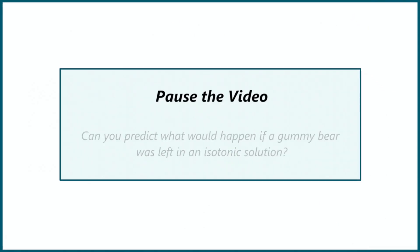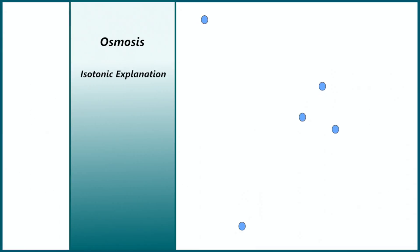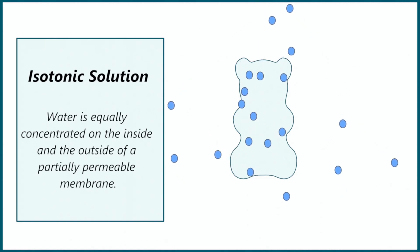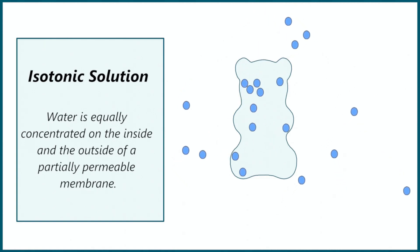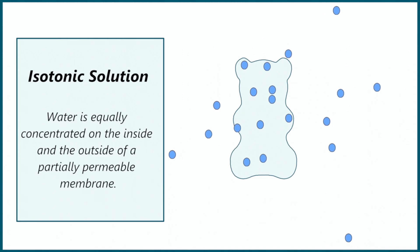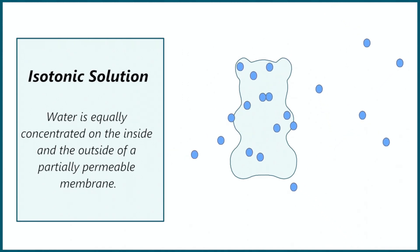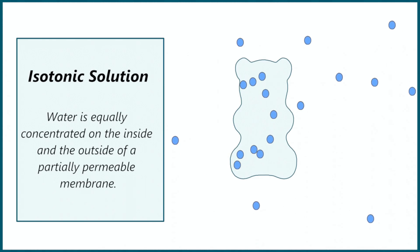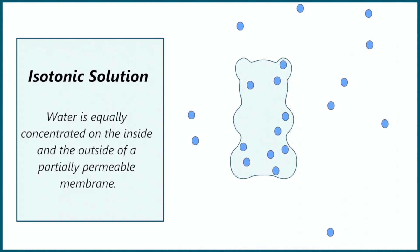Can you predict what would happen if a gummy bear was left in an isotonic solution? Pause the video and try to answer. For this gummy bear the water concentration is the same on the inside and outside. This means some water moves into the bear and some water moves out. As a result there will be no change in the size of the gummy bear.